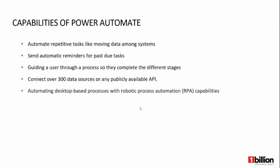There are some types of flows in Power Automate that are really used to guide users through certain kinds of processes. I'm going to talk more about these kinds of flows under the different types of flows section. Another important aspect is that Microsoft Power Automate allows us to connect with over 300 data sources.